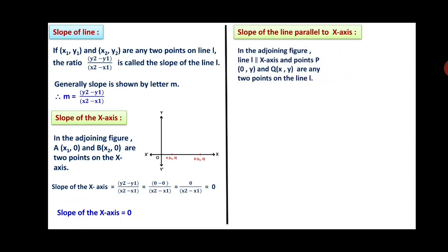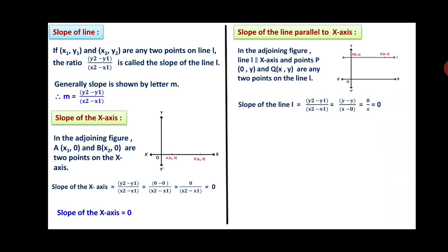Slope of the line parallel to the x-axis: line L is parallel to the x-axis, and points P(0, y) and Q(x, y) are two points on line L. So slope of line L = (y2 − y1)/(x2 − x1) = (y − y)/(x − 0) = 0/x = 0. Therefore the slope of a line parallel to the x-axis is 0.